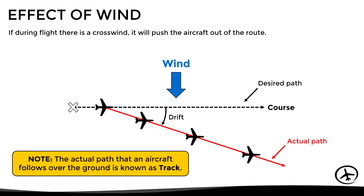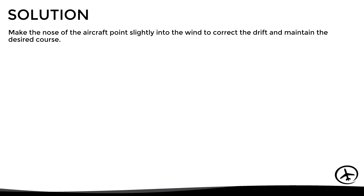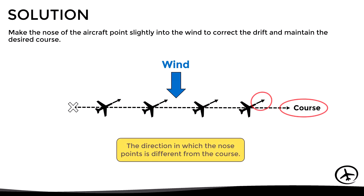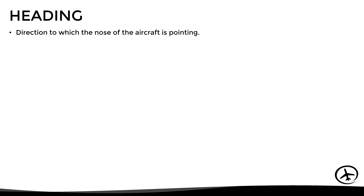To solve this situation so that the aircraft stays on course, we have to make the nose of the aircraft point slightly into the wind to correct the drift and maintain the desired course. The direction in which the nose points is different from the course, so to distinguish between the course and the direction the nose is pointing, we have the concept of heading.